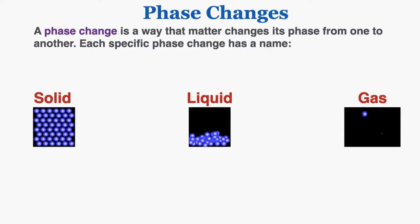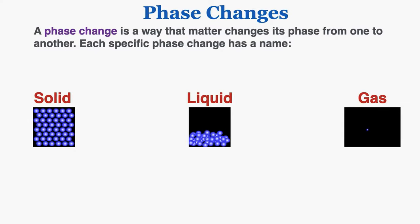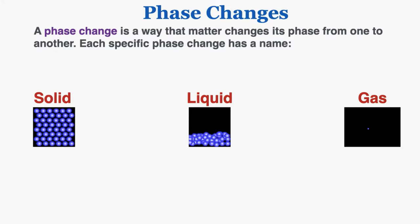We're now on the main focus of the lecture. A phase change is a way that matter changes its phase from one to another. Each specific phase change has a name that you will have to memorize for this unit, so I'm going to run through each one and give you an example.